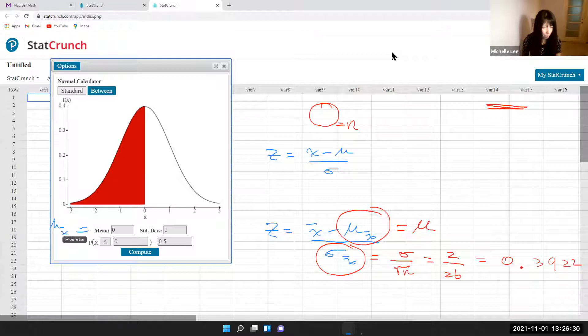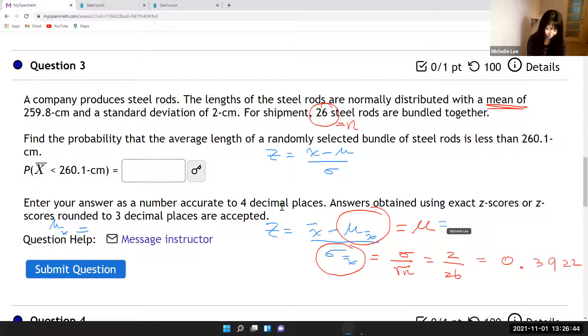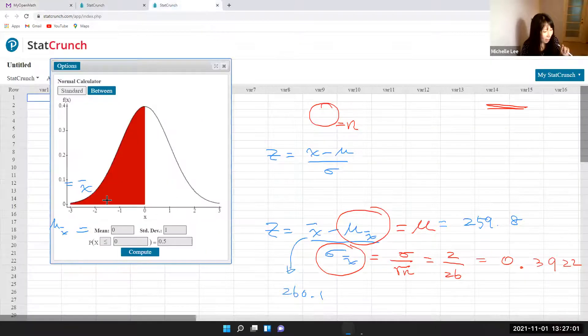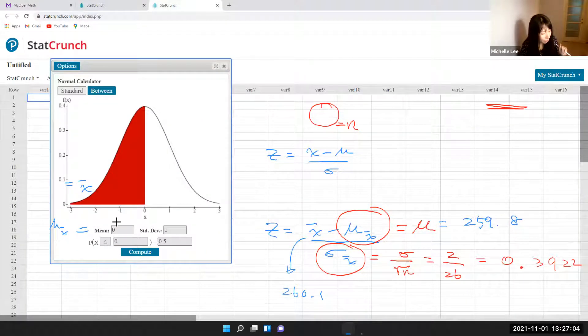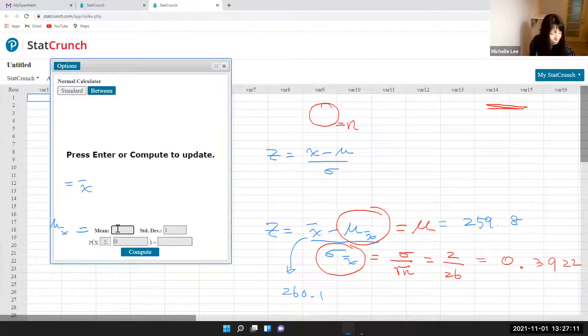So mu sub x bar, we're going to use that. This will be mu sub x bar. Oh, I did not write the number there. Let me go back. So this will be mu equal to 259.8, right? So everything's good. And x bar, so this will be x bar which is 260.1. So let's go back quickly. So x bar will be, let me do mean first. So mean which is mu sub x bar, which is mu, which is 259.8.